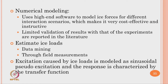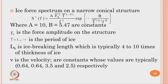For estimating ice loads, people generally use data mining or field measurements. The excitation caused by ice loads is modeled as sinusoidal pseudo-excitation, and the response is characterized by an appropriate transfer function. The ice force spectrum on a narrow conical structure is given by an equation where constants A and B are 10 and 5.47 respectively. F₀ is the force amplitude on the structure. T̄ is the period of ice, which is the ratio L_B/V, where L_B is the ice-breaking length (typically 4 to 10 times the ice thickness) and V is velocity.